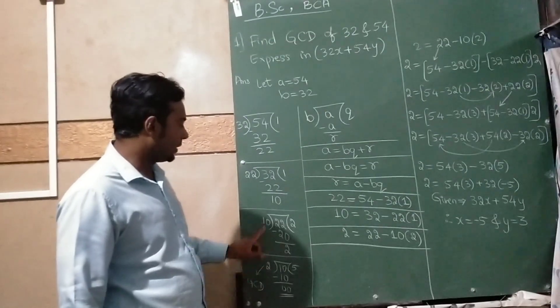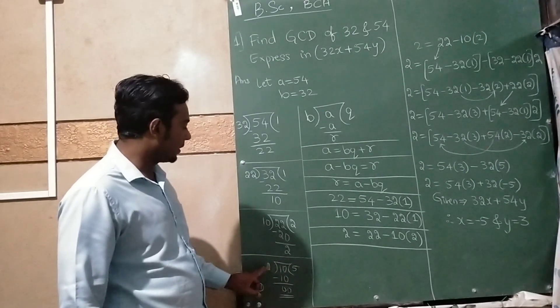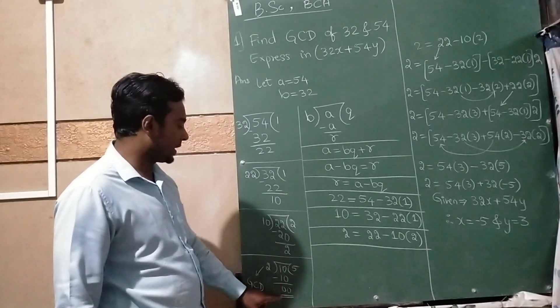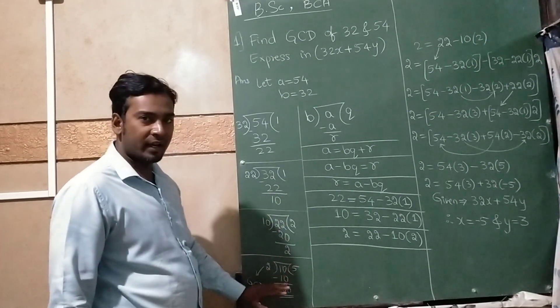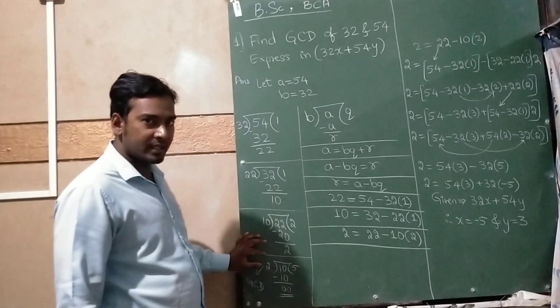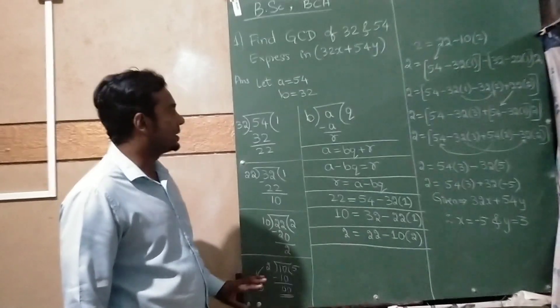Taking 2 here and 10 inside, 2 fives are 10, subtracting gives 0. Until you get 0, keep dividing, and the last divisor is called the GCD.